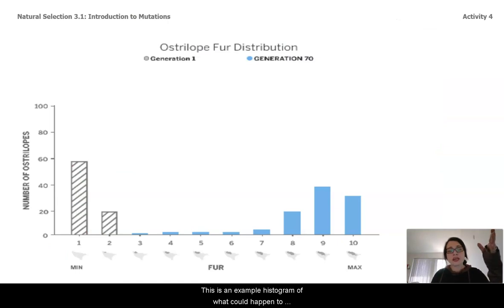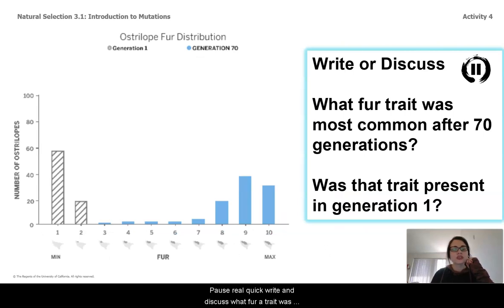This is an example histogram of what could happen to population B if they were set to a cold environment and they had mutations enabled. So pause real quick, write and discuss. What fur trait was most common after 70 generations? And was that trait present in generation 1?